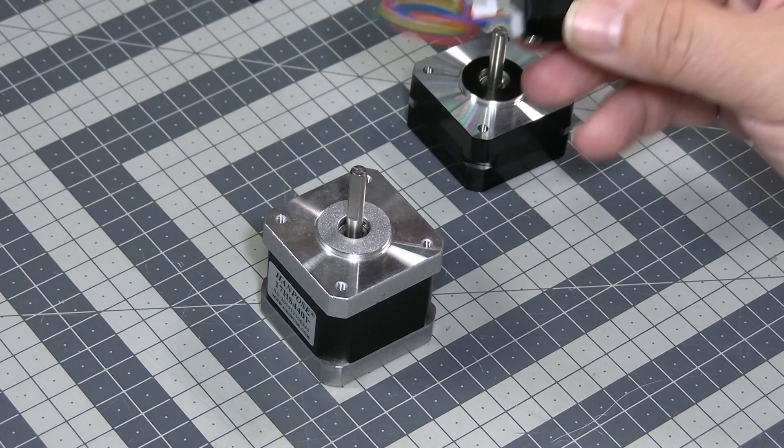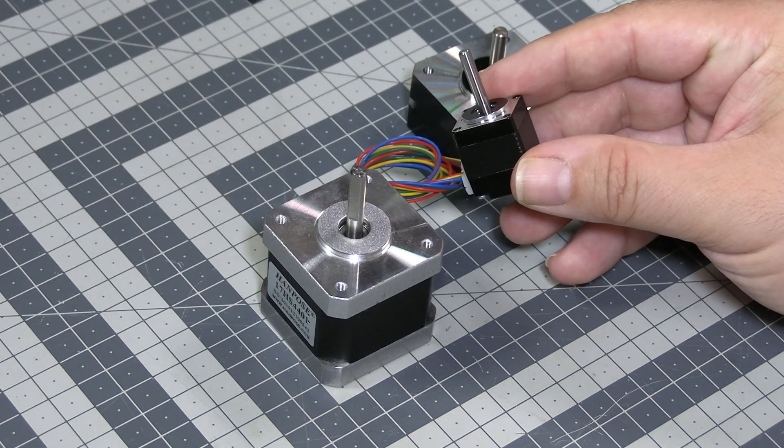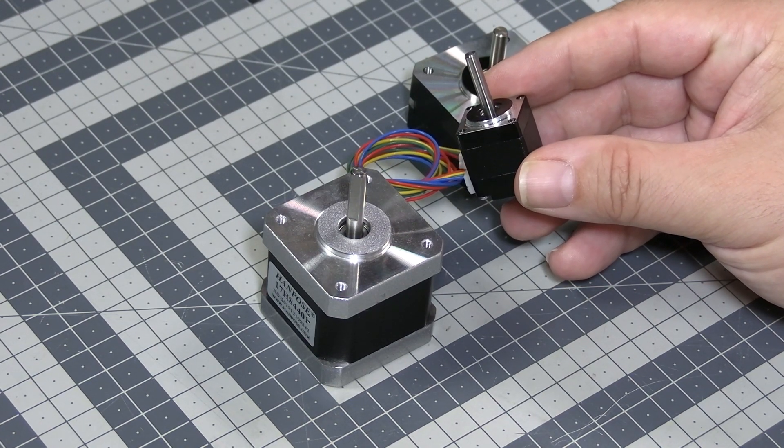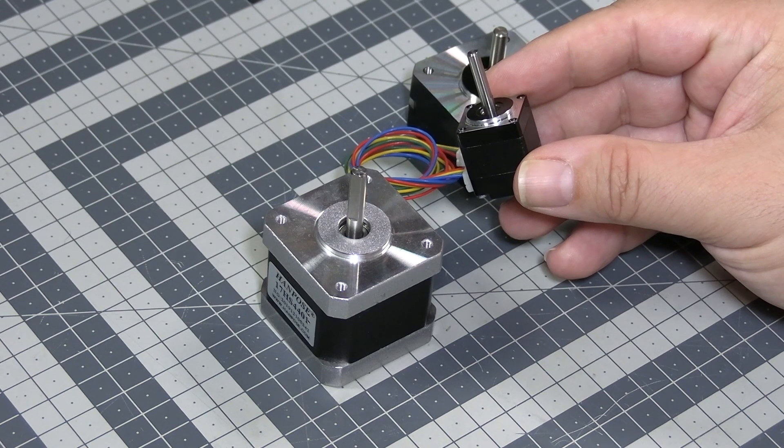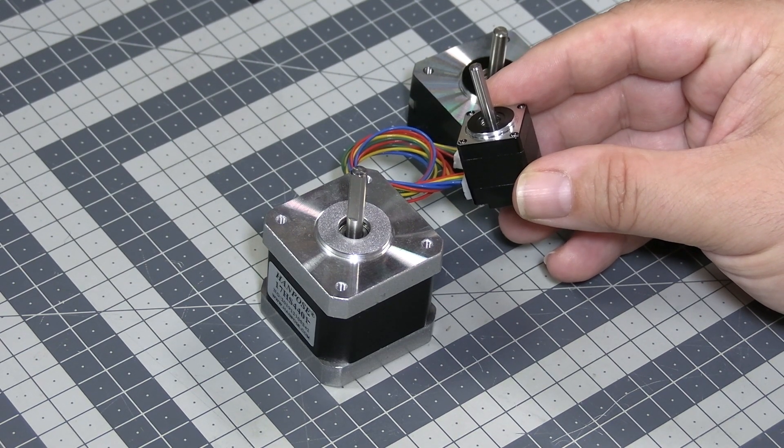If you want to go even smaller, how about NEMA 8, which will work almost exactly the same, although of course it will have much less torque.